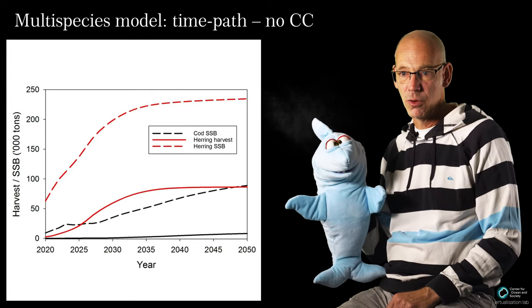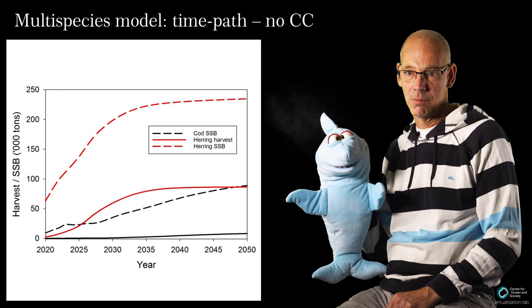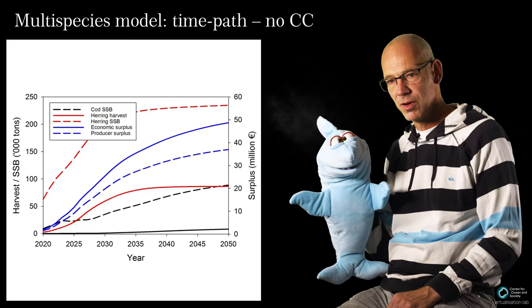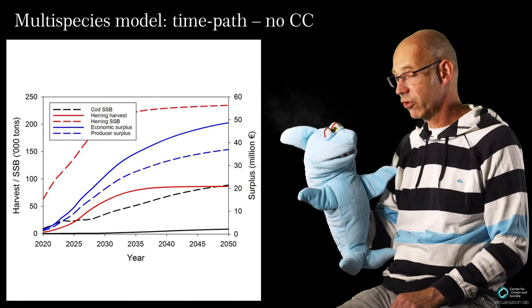Herring would recover as well. Fortunately, much faster than cod. Total economic surplus as well as producer surplus increase, and we would be able to have a profitable fishery.